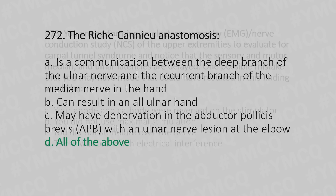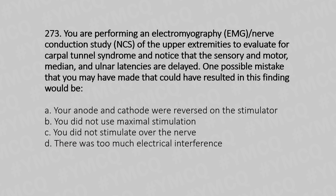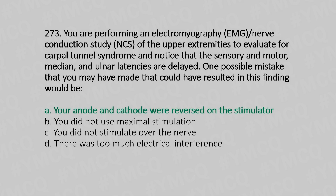Now let's move to question number 273. You are performing an electromyography or nerve conduction study of the upper extremity to evaluate for carpal tunnel syndrome and notice that the sensory and motor median and ulnar latencies are delayed. One possible mistake that you may have made is: Option A, your anode and cathode were reversed on the stimulator; Option B, you did not use maximal stimulation; Option C, you did not stimulate over the nerve; Option D, there was too much electrical interference. And the answer is Option A, your anode and cathode were reversed on the stimulator.